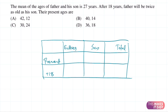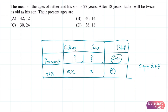Let's fill the table as much as possible. The mean of the ages of father and son is 27 years, so the total of their present ages is 2 times 27 equals 54. After 18 years, the father will be twice as old as his son, so if the son's age after 18 years is x, the father's age will be 2x. The total after 18 years will be 54 plus 18 plus 18, which is 90.